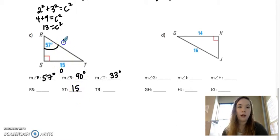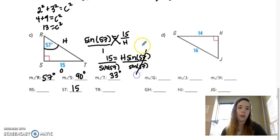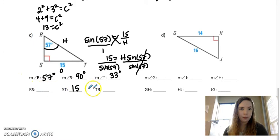So let's say I want to find the hypotenuse next. I would use sine, so I could use opposite over hypotenuse. So sine of 57 equals 15 over my hypotenuse. When H is in the bottom, I think it's easiest to cross multiply. So you get 15 equals H times sine of 57. So H is 15 divided by sine of 57. So if I take 15 divided by sine of 57, I get 17.9 for RT.